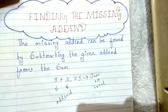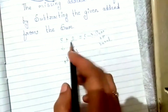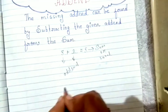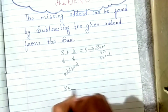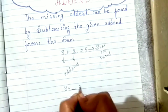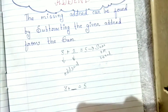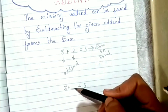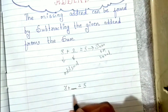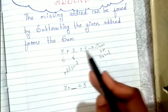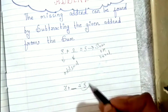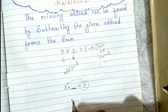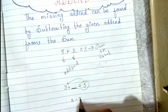इतना clear हुआ? तो जैसे आपके पास 3 दिया हुआ है, और उन्होंने पूछा है, उसमें क्या plus करें कि 5 हो? That means उसका एक addend जो है वो missing है, तो उसको find करना है। तो हम क्या करेंगे - जो उसका sum है, उसमें से ये वाला number minus कर देंगे, तो आपका missing addend find हो जाएगा।